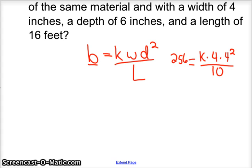So anyway, now we need to find out K. You'd multiply both sides by ten to eliminate the denominator. And so 2560 equals K times four squared times four, which is 64. And so then I know K would be 2560 divided by 64.